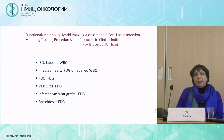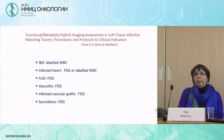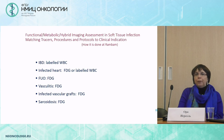For inflammatory bowel disease, labeled white blood cells; for infected heart, both. For FUO, vasculitis, infected graft, and sarcoidosis, mainly FDG — but gallium and white blood cells SPECT-CT are very valid and good options as well.